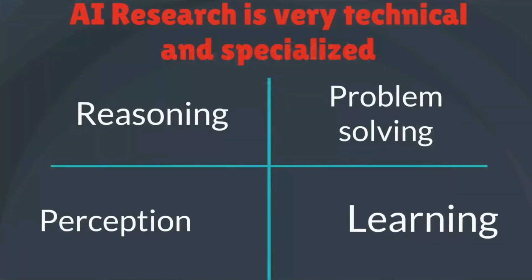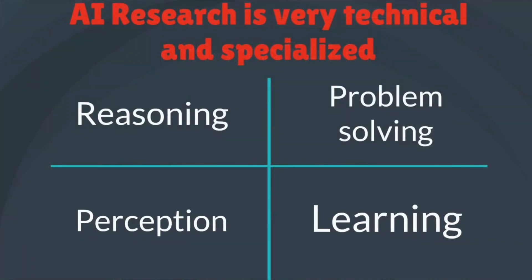Nowadays, research that is associated with AI is very technical and very specialized, and you have a lot of different options. There are big problems in AI that we didn't solve yet, such as reasoning, problem-solving, perception, and learning.